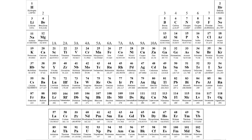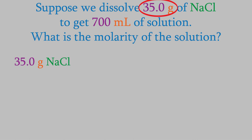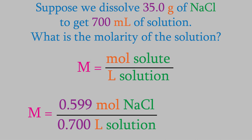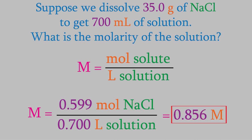For the moles of solute, we'll use the periodic table. We have 35.0 grams of sodium chloride. From the periodic table, we find that NaCl has a mass of 58.442 grams per mole. We want the grams to cancel, so it goes in the denominator and the one mole goes up top. That gives us 0.599 moles of NaCl. We plug that into our formula for molarity and find that we have a 0.856 molar solution. Remember, the symbol for molarity is a capital M, not lowercase — that'll be important later in this video.